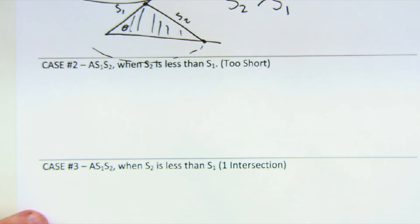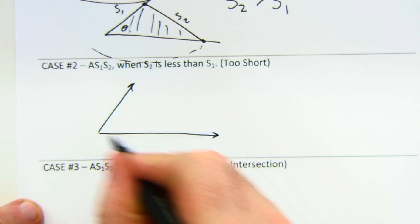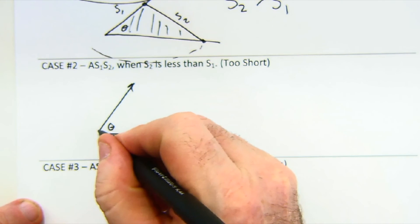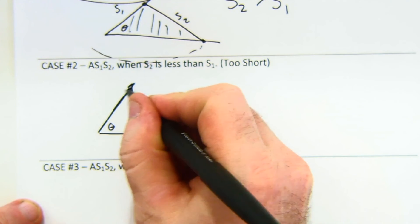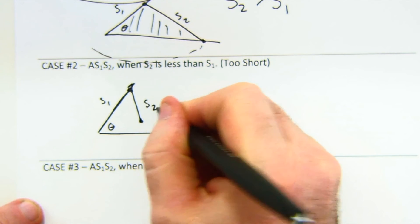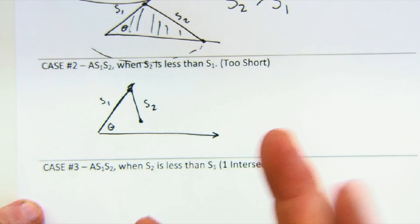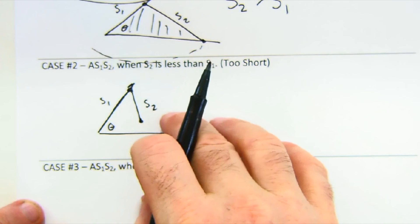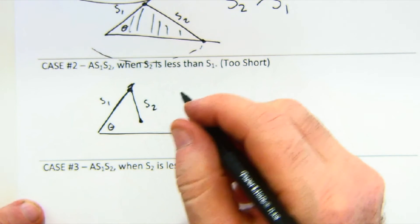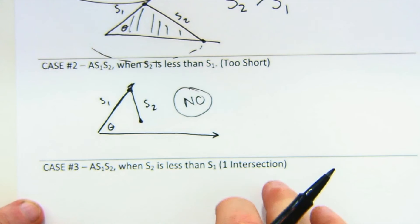Now let's look at when side two is shorter. Shorter has a couple of options. First, the easy one: when it's too short. If we have our angle, create side one, and side two is just too short — it sounds like Goldilocks — it would swing there and never close. This gives no answers and no congruence. It doesn't even form a triangle.